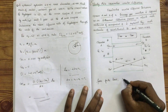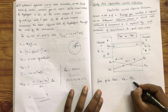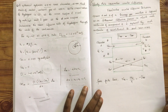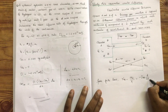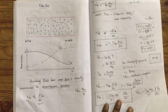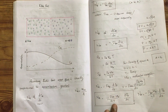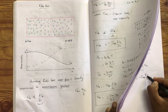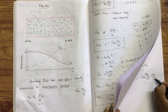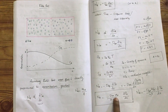The diffusion coefficient of species A and species B will be equal. According to Fick's law, Na is equal to mA by A, minus DAB into dPA by dx divided by RT. This is the first step.